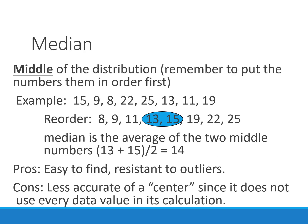What we use instead of the mean is the median. The median is the middle of the distribution — remember to put the numbers in order first. When we have an odd number of values, it's the number right in the middle. With an even number of values, it's the average of the two middle numbers. The median is easy to find and resistant to outliers. For example, adding an outlier like 500 would only shift the median slightly, from 14 to 15, whereas the mean would get much larger. The con is that it's less accurate because we're not using every value.